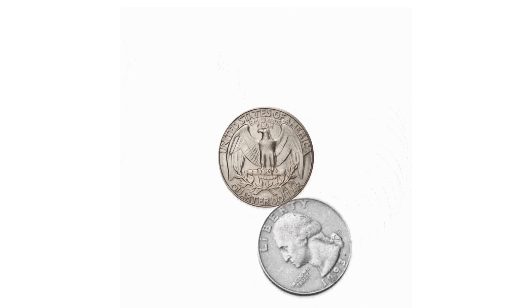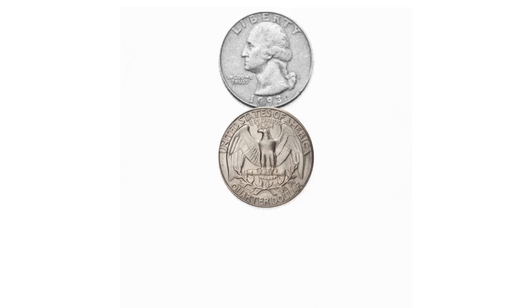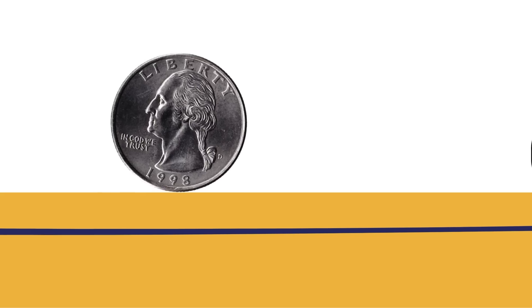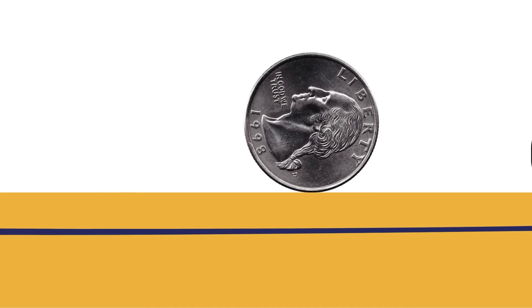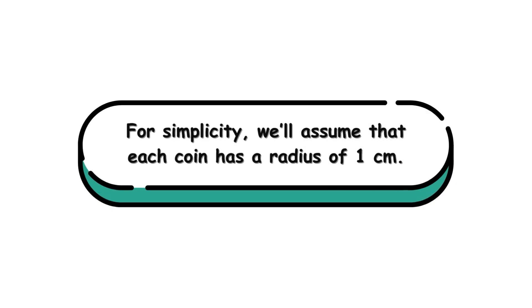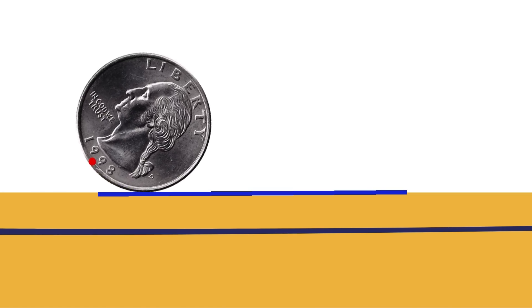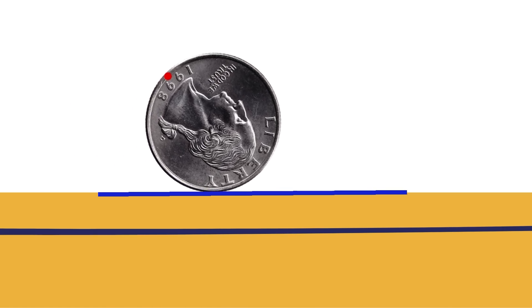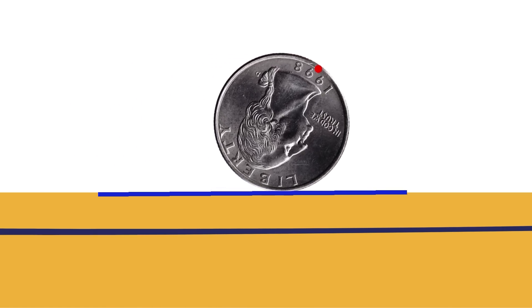coin B actually makes two turns during the round trip. To understand this, let's examine a simpler scenario: rolling coin B along a flat surface. For simplicity, we'll assume that each coin has a radius of 1 centimeter. For the rolling, we will track the point on the edge of coin B that starts out touching the surface.